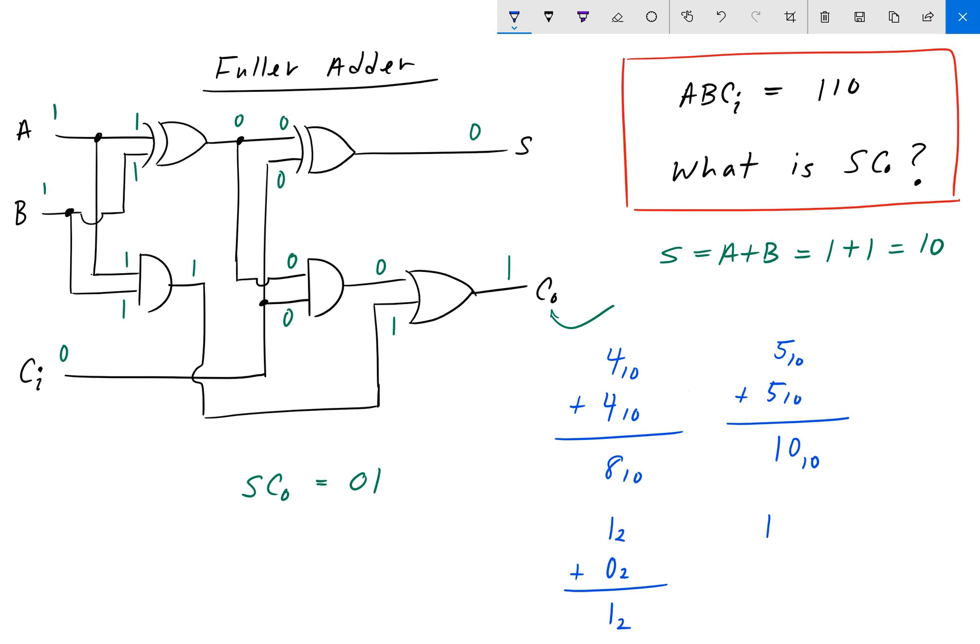And when you have 1 base 2 plus 1 base 2, you do the same thing. You've ran out of digits. And so, you put the 0 down, and then you carry over a 1, like so.